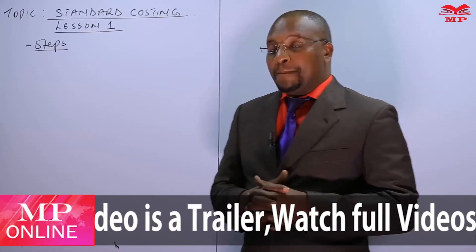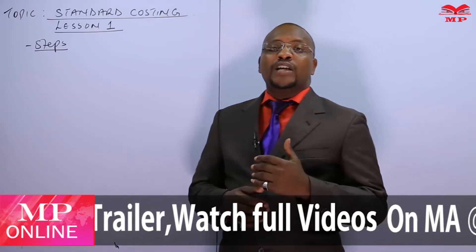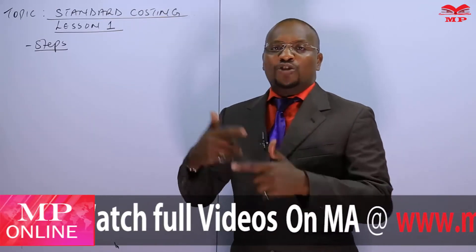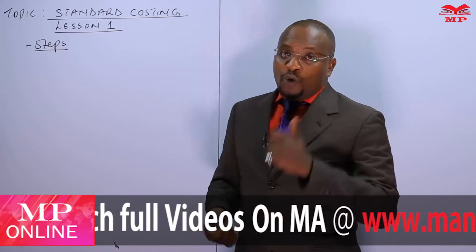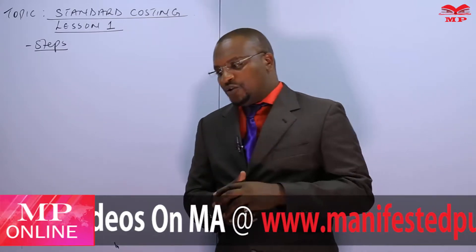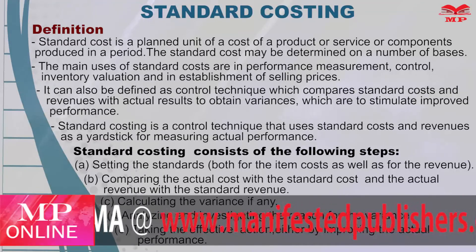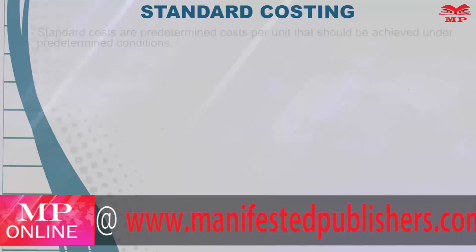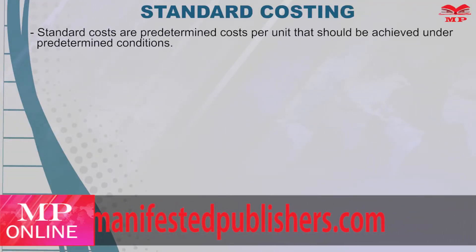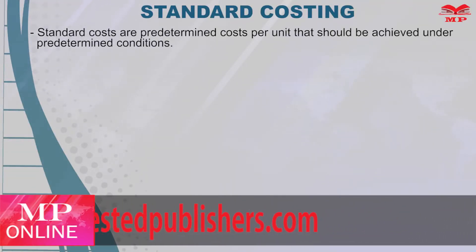We need to be revising the budget every now and then, because the periods are not the same. We may even stop producing a particular product and start another version, which means we need to revise our standards. Standard costs are a predetermined cost per unit that should be achieved under predetermined conditions.